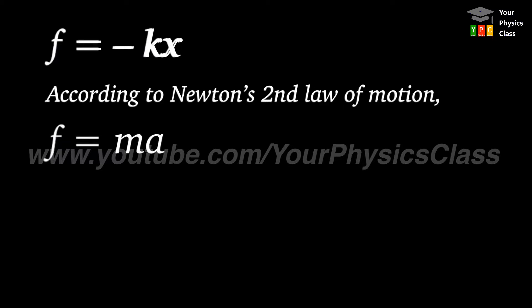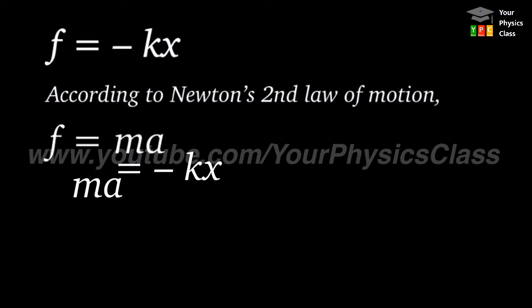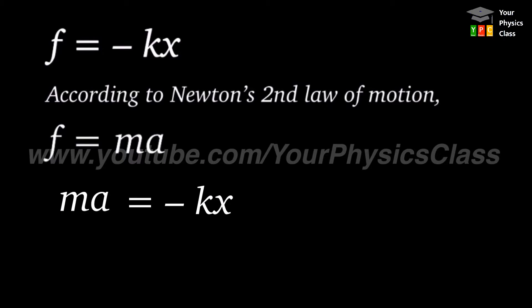Now let us compare these two equations of force. Therefore, mass times acceleration equals minus k times x. Let us number this equation as equation 1.